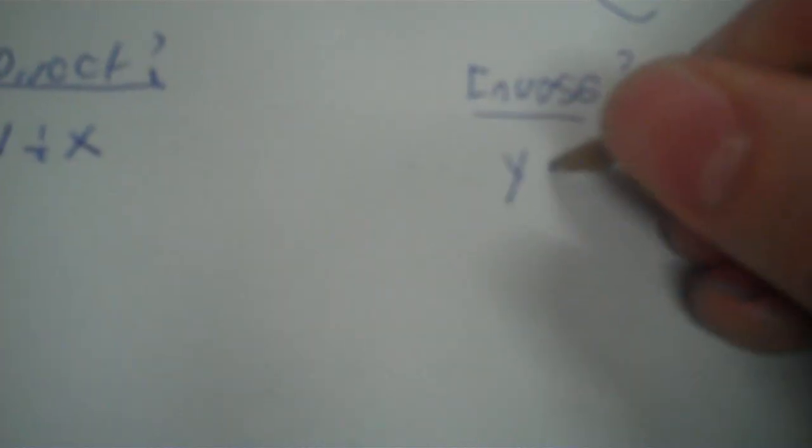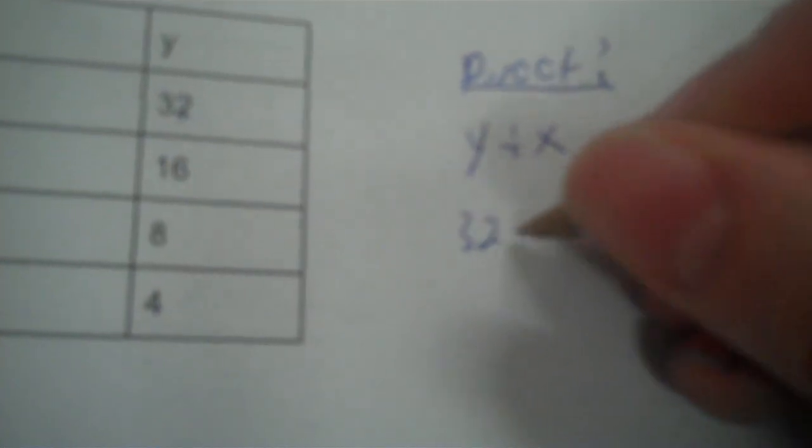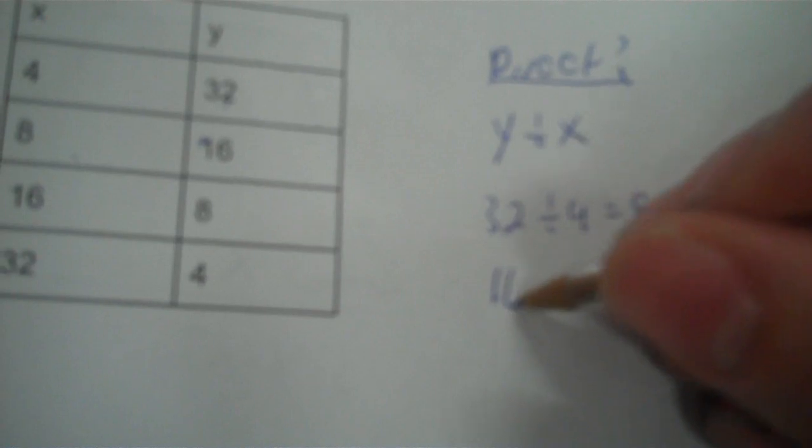So y divided by x, y times x. So 32 divided by 4 is 8. 16 divided by 8 is 2. So it definitely can't be that.